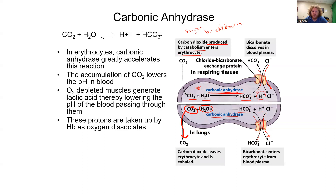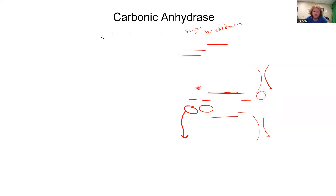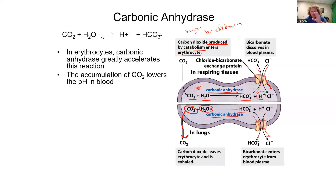O2-depleted muscles generate lactic acid, thereby lowering the pH of the blood passing through them. These protons are taken up by hemoglobin as oxygen ultimately dissociates. This illustrates part one: CO2 diminishes oxygen binding by decreasing pH.